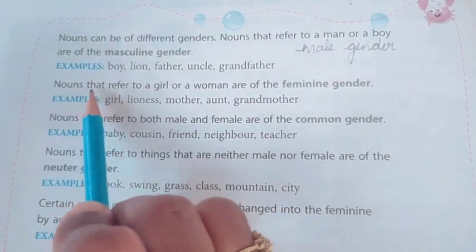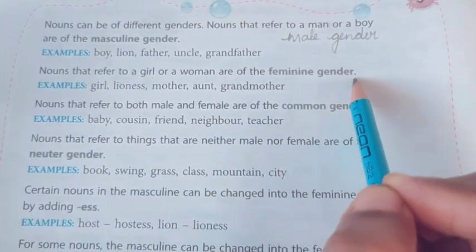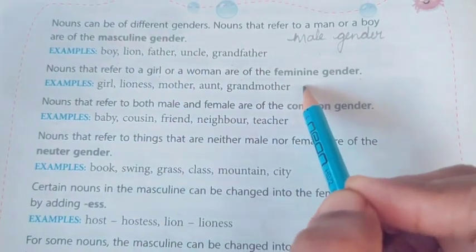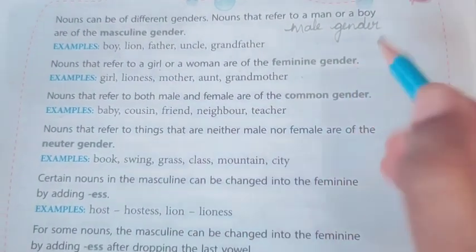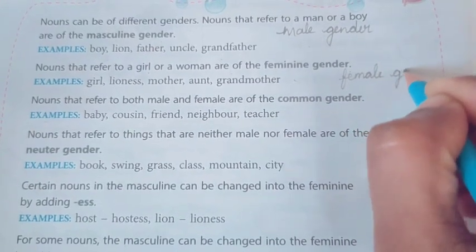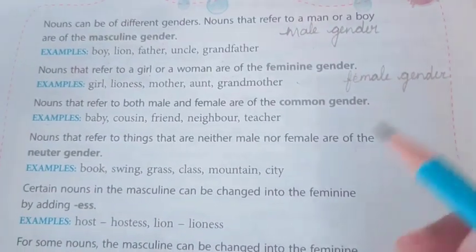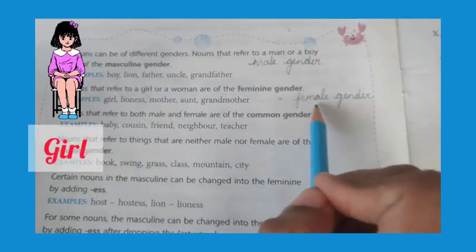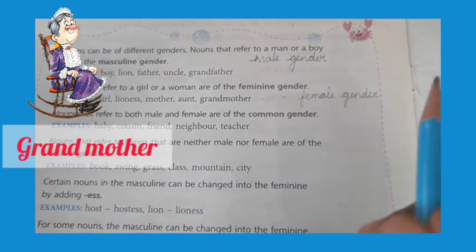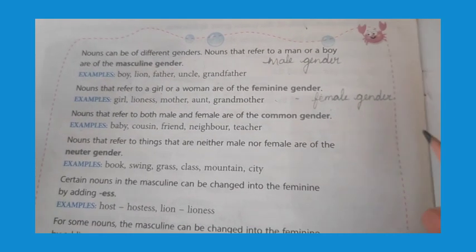Nouns that refer to a girl or a woman are of the feminine gender. If this is male gender and this is female gender, we call this as female gender. It is female gender — like sister, mother, grandmother, aunt, girl. All this comes under female gender.